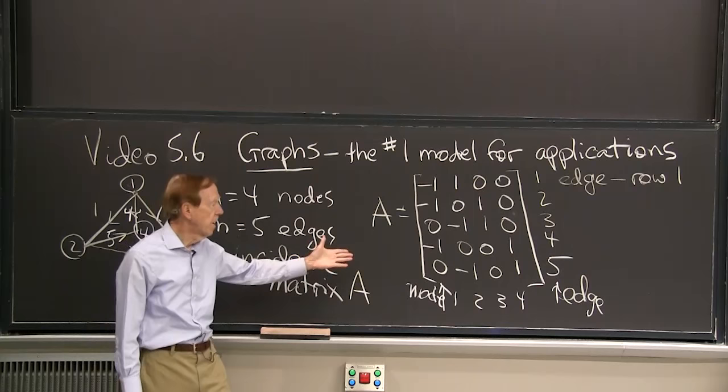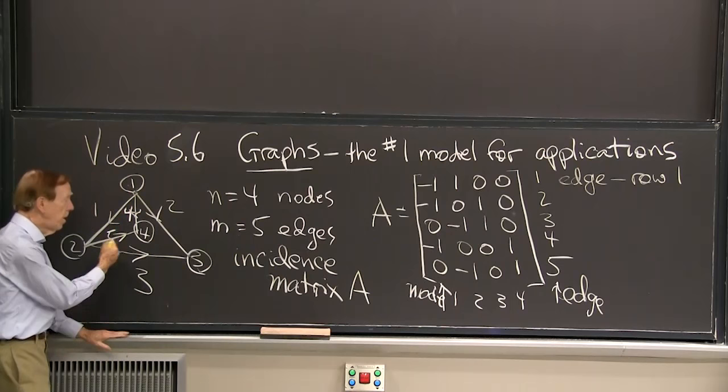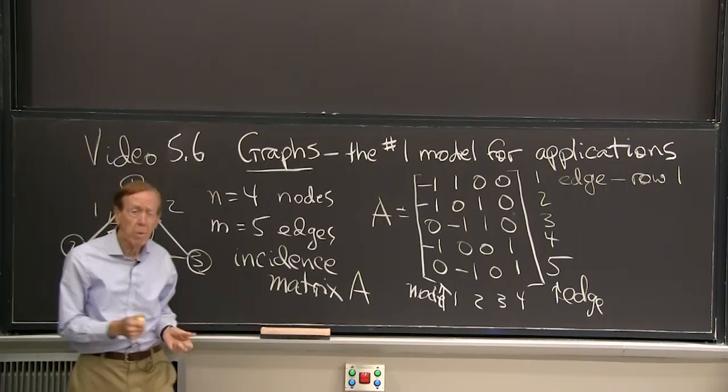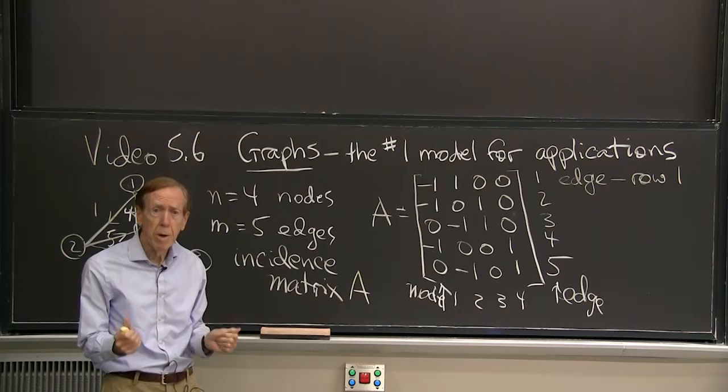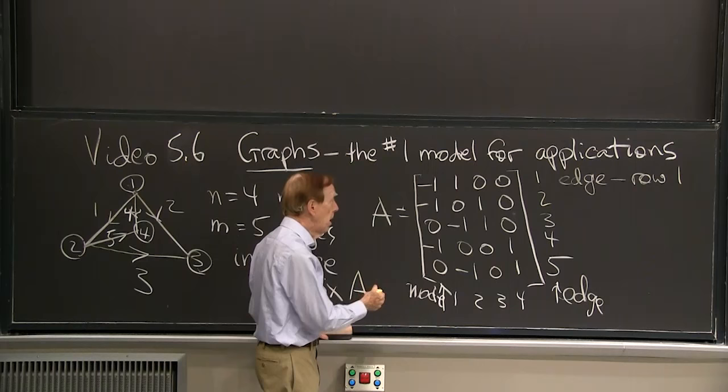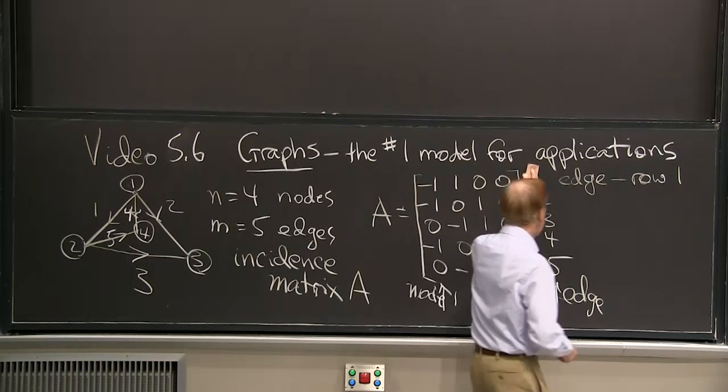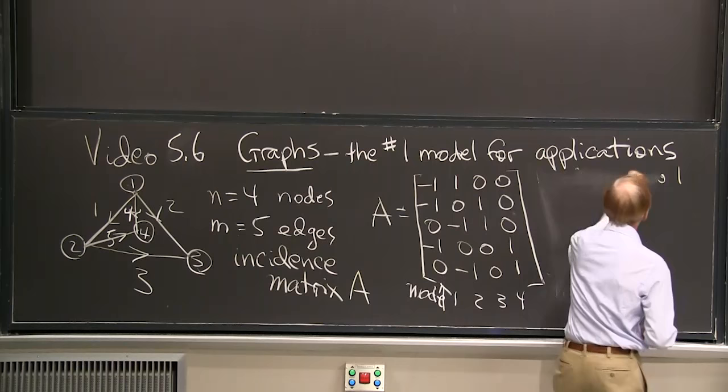OK. Do you see there the graph? Everything, all the information in this picture is now captured in that matrix. So we can work with the matrix. And what does a matrix do? It multiplies vectors. That's what a matrix does. It acts on vectors. So what happens if I multiply that matrix by a vector? So now let me take out these edge numbers and do a multiplication.